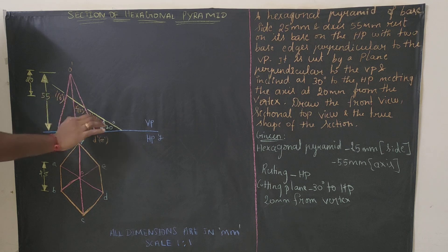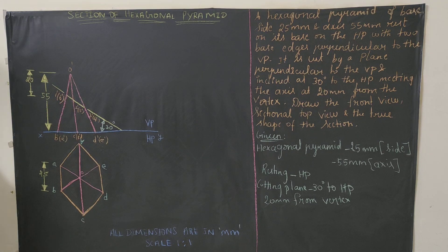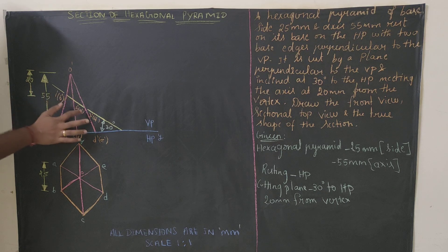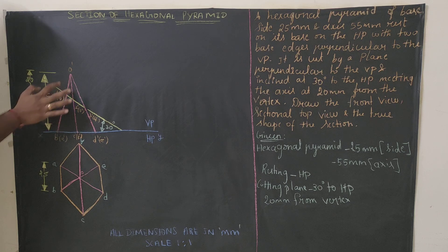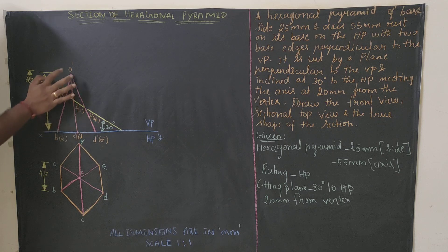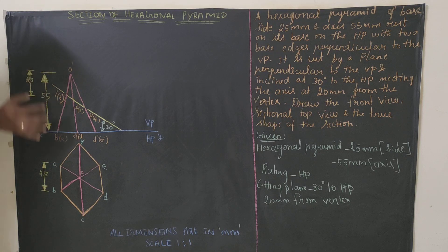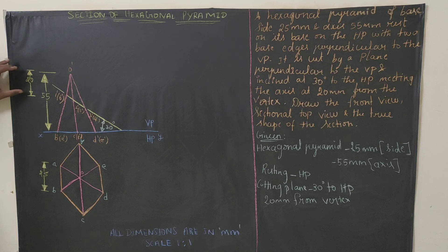The cutting plane line is inclined at 30 degrees. Dimension the angle here. Leave a 1mm gap and extend the cutting plane line further for dimensioning. Name the cutting points: 1-dash between O-dash and B-dash; 2-dash between O-dash and C-dash; 3-dash between O-dash and D-dash; 4-dash between O-dash and E-dash; 5-dash between O-dash and F-dash; 6-dash between O-dash and A-dash. Dimension 20mm and the 30-degree angle.